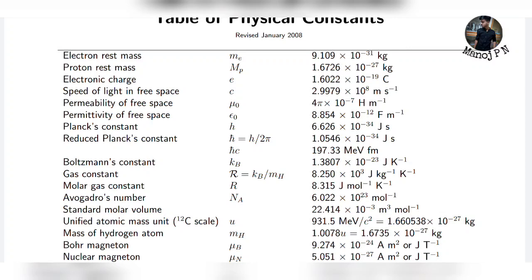Units and measurements — every unit: speed, velocity, displacement, acceleration — everything has dimensions. Dimensions are very important because you have to apply the principle of homogeneity: LHS equal to RHS. If equal, the equation is valid.